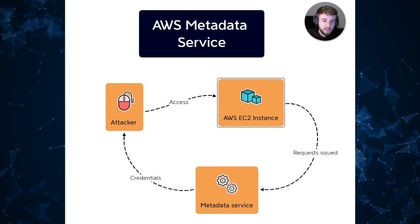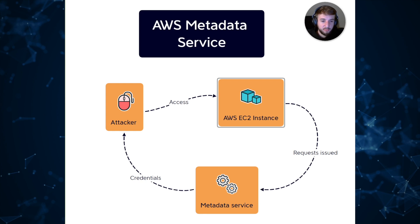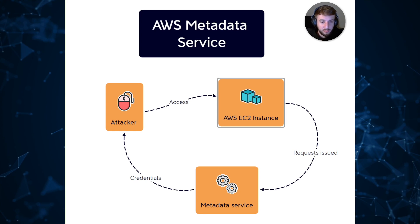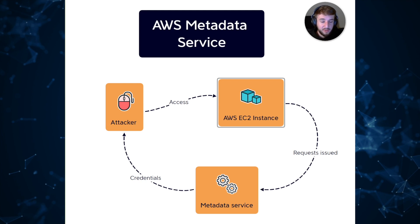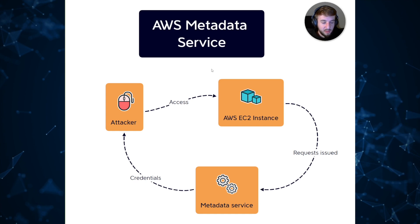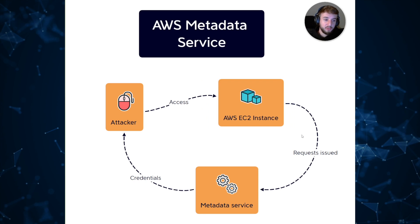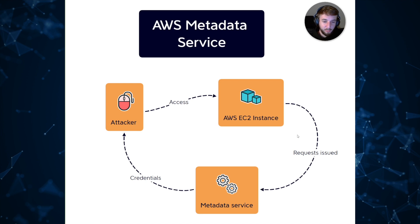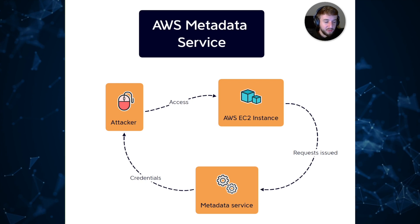The AWS metadata service is provided to any instance on AWS by default, and it continues to be a really useful attack vector for people who target AWS, specifically web applications hosted on AWS. To understand how this attack vector works, you need to understand what the metadata service is. Simply put, it's an internal IP address attached to any given EC2 instance by default that provides information for application developers. Amazon defines it as a service that provides temporary, frequently rotated credentials — and you can understand why that would be extremely beneficial for an attacker.